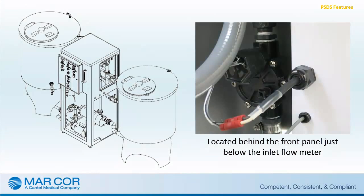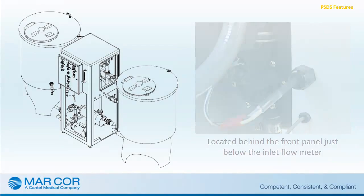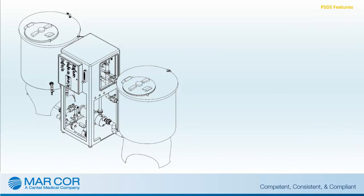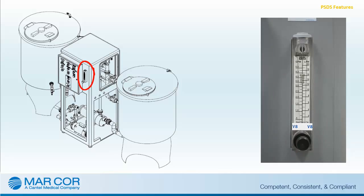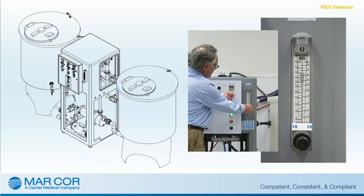The inlet water solenoid valve serves to shut off or to turn on the water supply to the bicarb mix tank, permitting automatic or manual filling. A panel-mounted flow meter with an internal needle valve allows for visual indication of tank filling and allows the user to adjust the water flow rate.